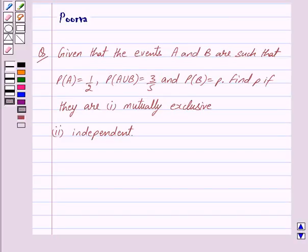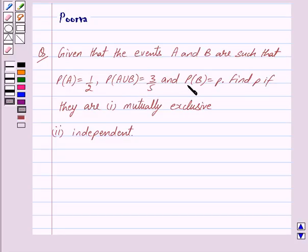Good morning friends, I am Purva and today we will work out the following question. Given that the events A and B are such that probability of A is equal to 1 upon 2, probability of A union B is equal to 3 upon 5, and probability of B is equal to P. Find P if they are: 1st mutually exclusive, 2nd independent.